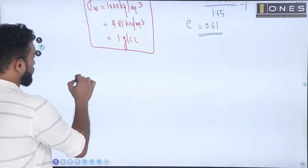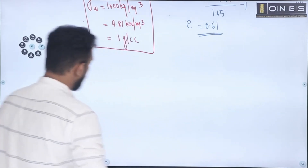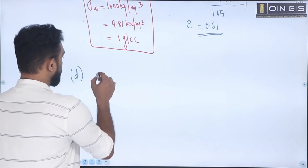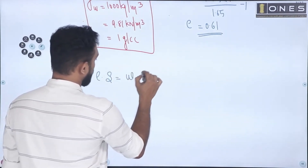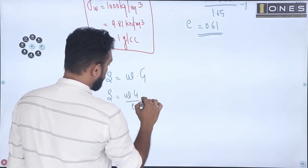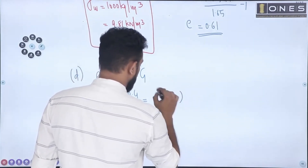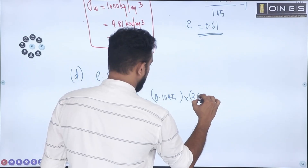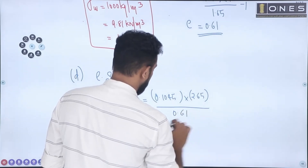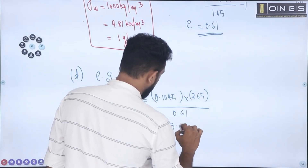Option D asks for degree of saturation. Using the phase relationship: e times S equals w times G. So S equals (w times G) divided by e. Substituting: water content is 0.1045, G is 2.65, and e is 0.61. This gives degree of saturation equal to 45.4%.